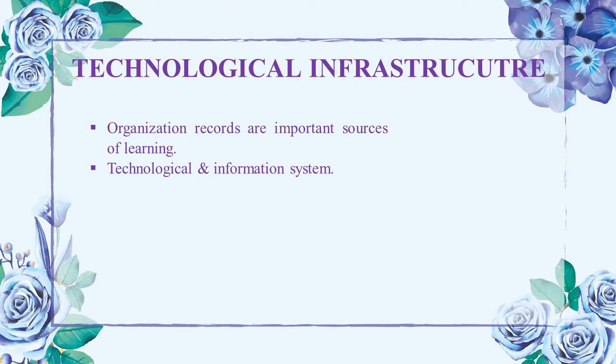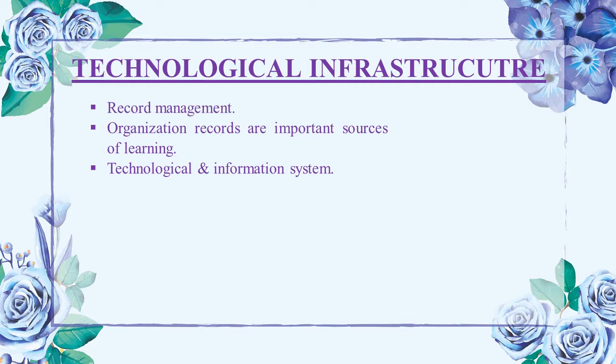The second category of technological infrastructure is records management. Firms generate enormous quantities of records that need to be managed. Core organizational data drawn from these sources need to be identified, catalogued, and stored so that they may be retrieved. In well-structured environments, there may be policies, staff assigned to records management functions, and clear guidelines on what should and should not be preserved. Records management complements knowledge management, as an organization's records are important sources of learning.